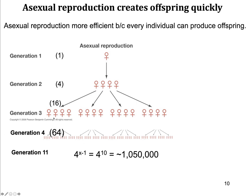In Generation 4 it would be 64 individuals — 4 times each individual, or 4 times 16. You can play this out through generations: the number of individuals in any generation is 4 to the power of (X minus 1). So in Generation 11, X is 11; 11 minus 1 is 10, giving 4 to the 10th individuals — over one million individuals in the population, given no limitation on growth.